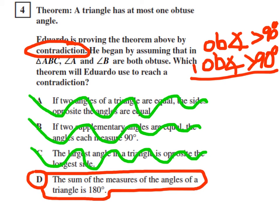So, if we add them together, their measure then should be greater than 180 degrees. So, that's for two obtuse angles.